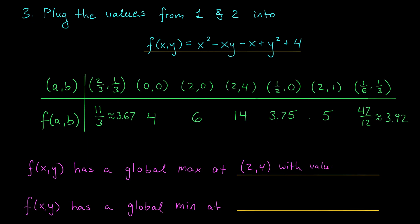The smallest value is going to occur here at our critical point. We have a global min at (2/3, 1/3), and the value is 11/3. It's approximately 3.67.